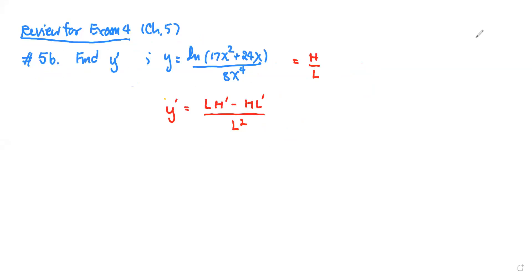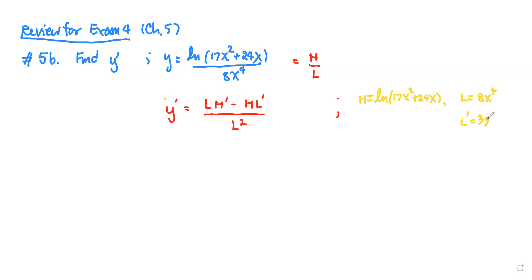I'm going to put a side note here. The high expression is the natural log of 17x squared plus 24x, and the low expression is 8x to the fourth. The derivative of the low is not too bad — it's 8 times 4, that's 32 times x to the third power, just using the power rule.